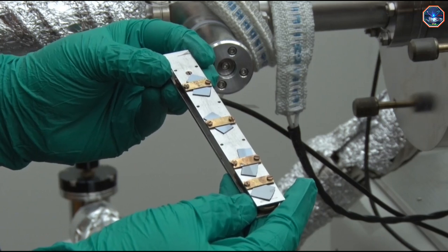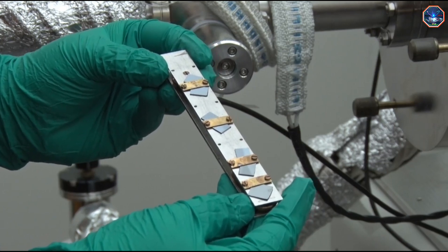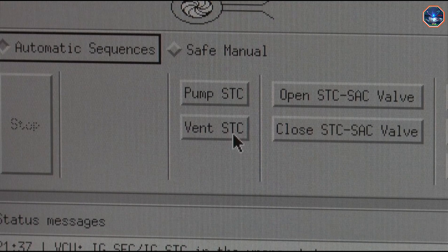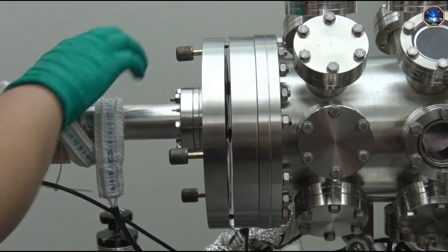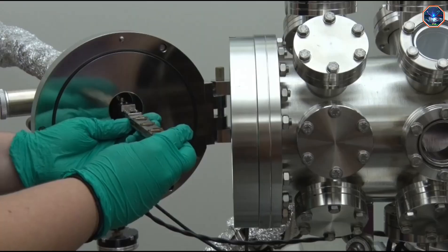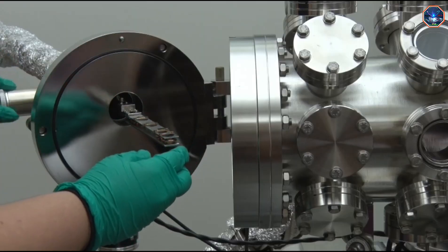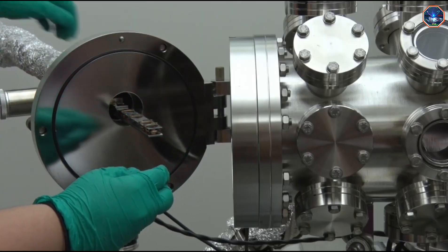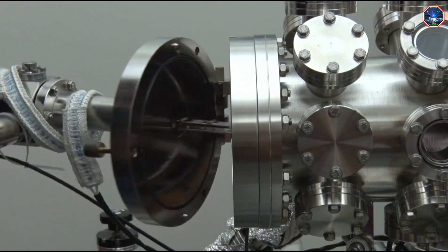Now let's load the samples I prepared earlier. First I'll vent part of the chamber to atmospheric pressure. After a few minutes I can open the door to the chamber and load my samples onto a transfer rod. Then I can close the chamber door and re-pump the system.